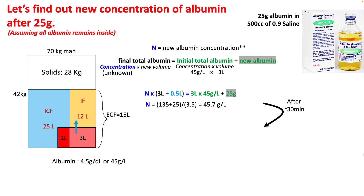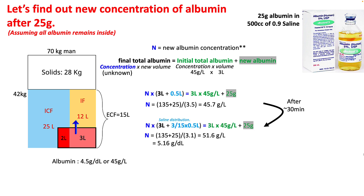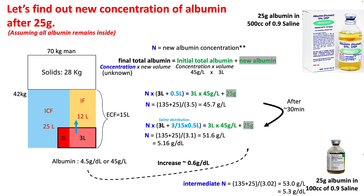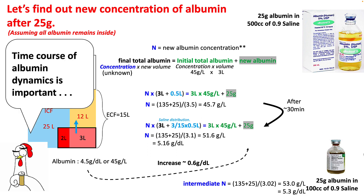However, the saline part of your 5% albumin is slowly going to equilibrate until around 80% of it is in your interstitium. So the final albumin concentration will come out to be 5.16 g/dL — an increase of 0.6 g/dL when you give 25 grams of albumin to a 70 kg person. When you give 100 cc of 25% albumin, your albumin concentration will be 5.3 g/dL. So the time course of albumin dynamics is important and it finally depends upon the fluid shifts that happen among different compartments.